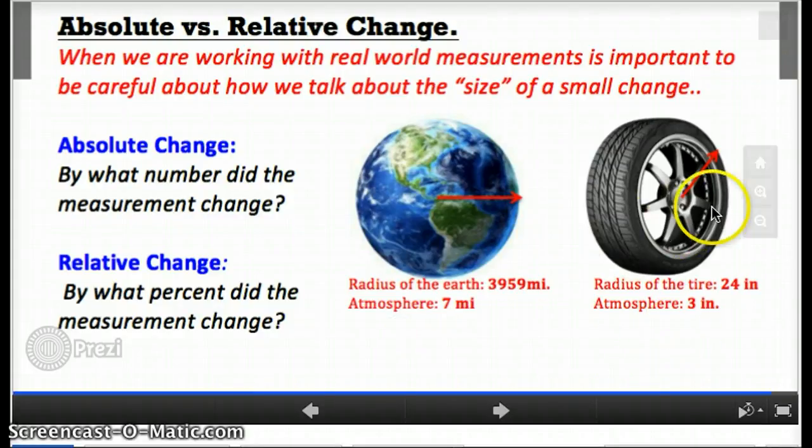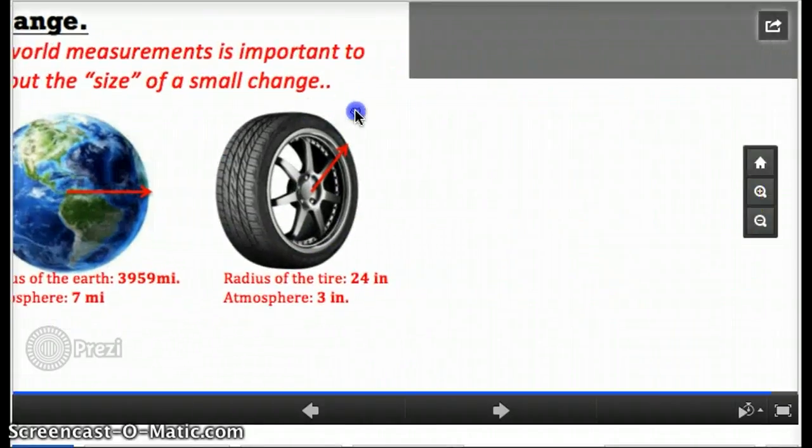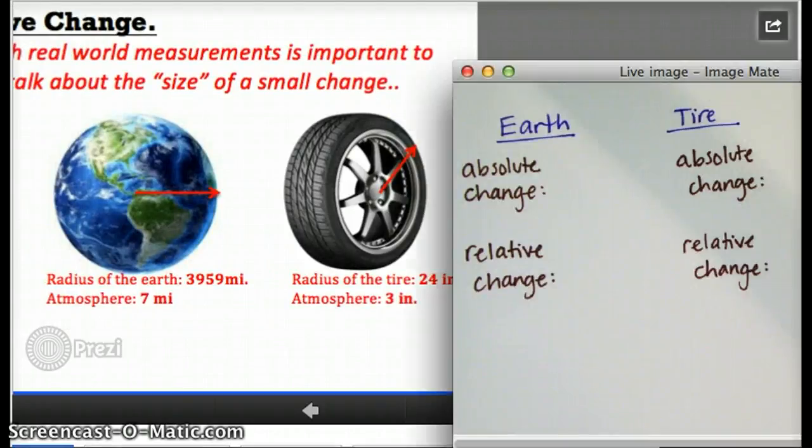We can see the numbers. In fact, let me show you the numbers here. If we're talking about the earth, the absolute change in this situation, the absolute difference between the two radiuses we've talked about is seven miles.